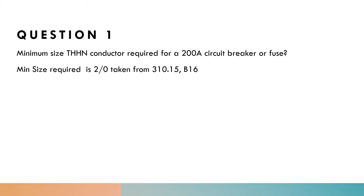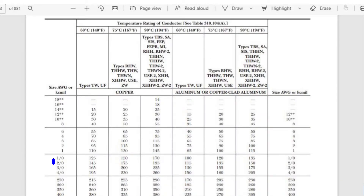We have a 2 AWG conductor of THHN value. THHN designates the temperature rating of the conductor, and we're going to look at Table 310.15(B)(16) within the 90-degree Celsius column for the value of this conductor.